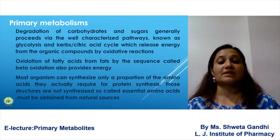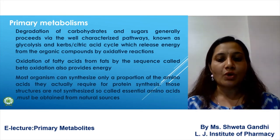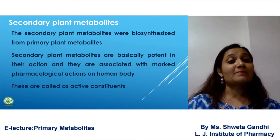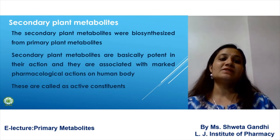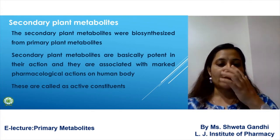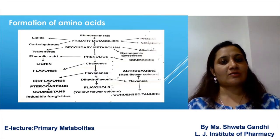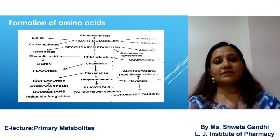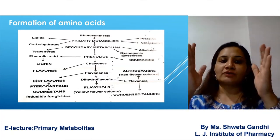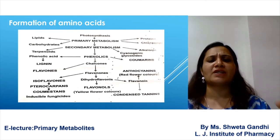Most organisms can synthesize only a proportion of the amino acids they require for protein synthesis; those not synthesized in the body are called essential amino acids, obtained from natural sources. Primary metabolites are the precursors for secondary metabolites. Secondary metabolites are biosynthesized from primary metabolites, are potent in their action, have certain physiological action, and are called active constituents. From photosynthesis, primary metabolism occurs, then secondary metabolites arise, giving active constituents like anthocyanins, isoflavones, flavones, phenolics, lipids, and proteins.